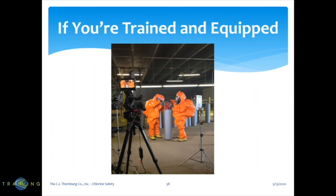If you're trained and equipped, you can respond. As you see these two gentlemen working on a leak on a 150-pound cylinder, they're in their moon suits with SCBAs — self-contained breathing apparatuses — that protect them. We at CI Thornberg company are not responders. The first thing you should do if you have a chlorine leak — or if you use sulfur dioxide in wastewater treatment — is call 911 first. That should be your first call. Then you can call CI Thornberg company and we will support as best we can.